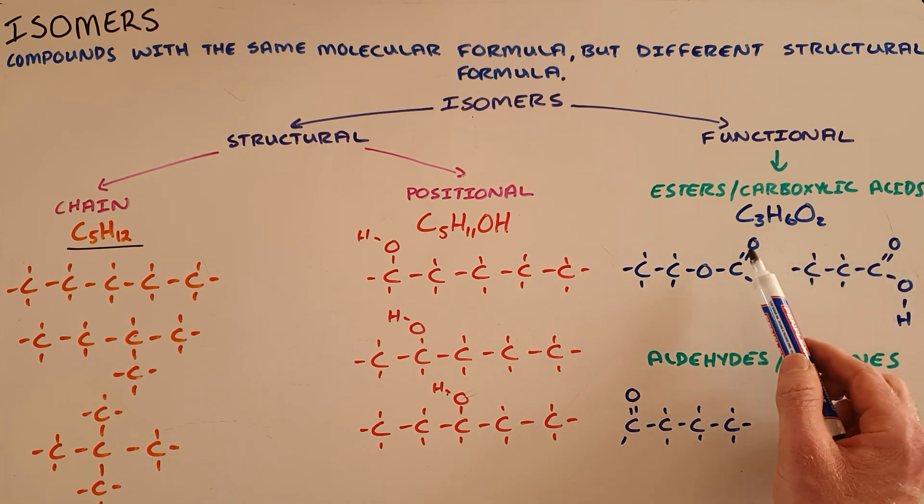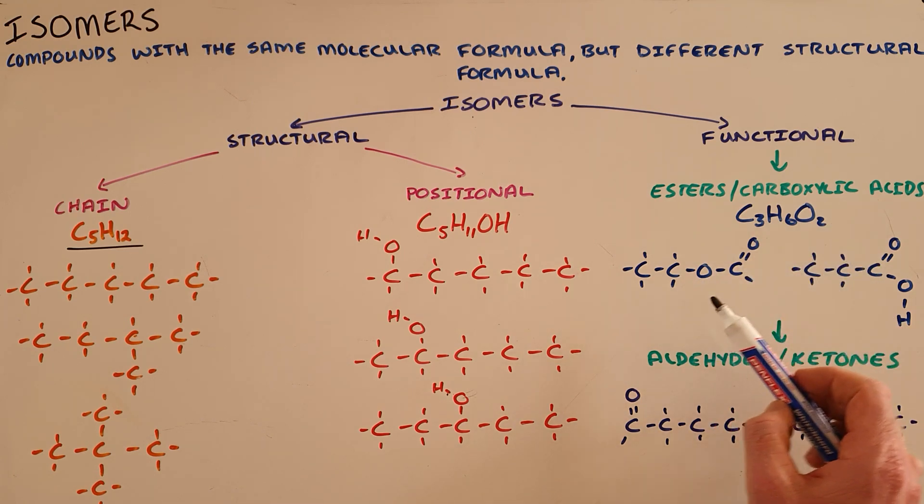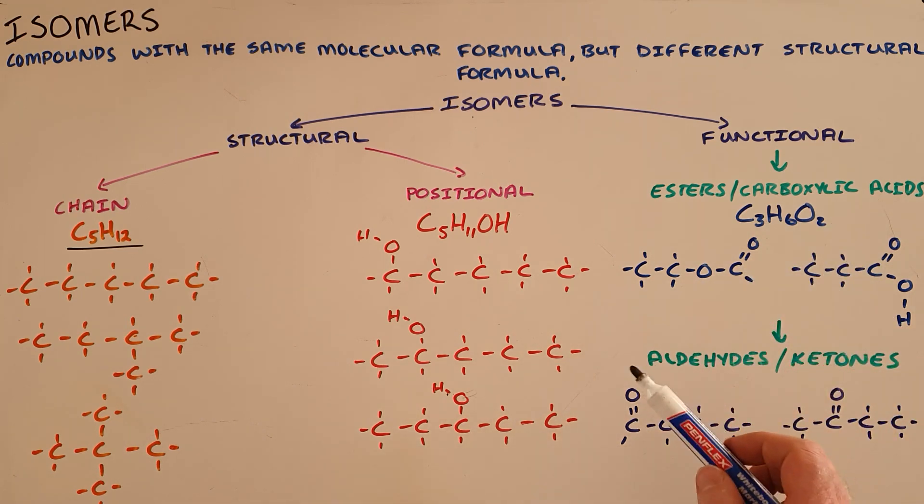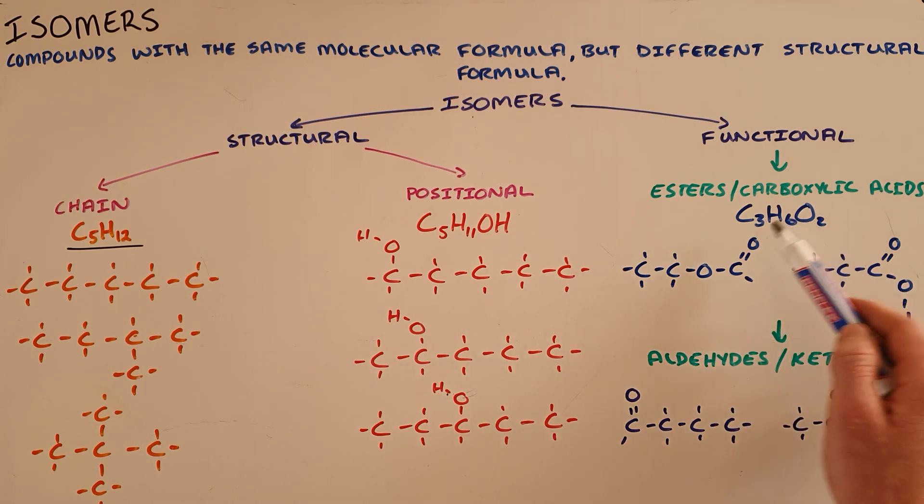But it is simple to identify the functional isomer for an ester because it will be a carboxylic acid with that same number of carbons. Similarly, but less common, we find that aldehydes and ketones are functional isomers of each other.